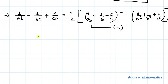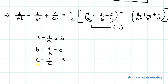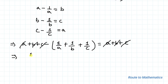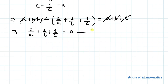Now, adding the three given equations — a minus 1 by a equals to b, b minus 1 by b equals to c, and c minus 1 by c equals to a — we have a plus b plus c minus (1 by a plus 1 by b plus 1 by c) equals to a plus b plus c. So a plus b plus c cancels from both sides, giving us 1 by a plus 1 by b plus 1 by c equals to 0. Let's take this as equation 5.